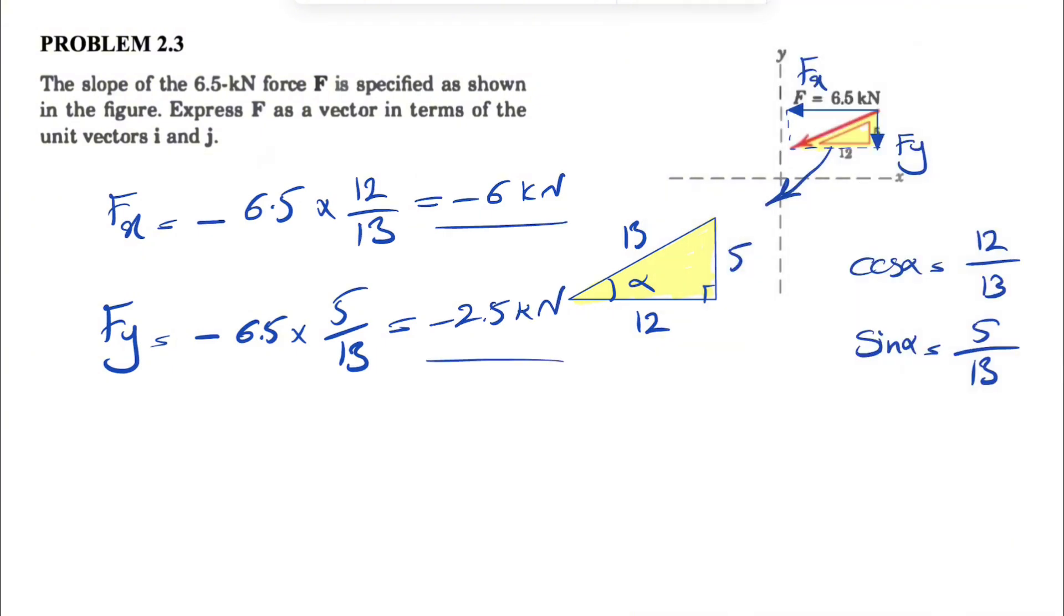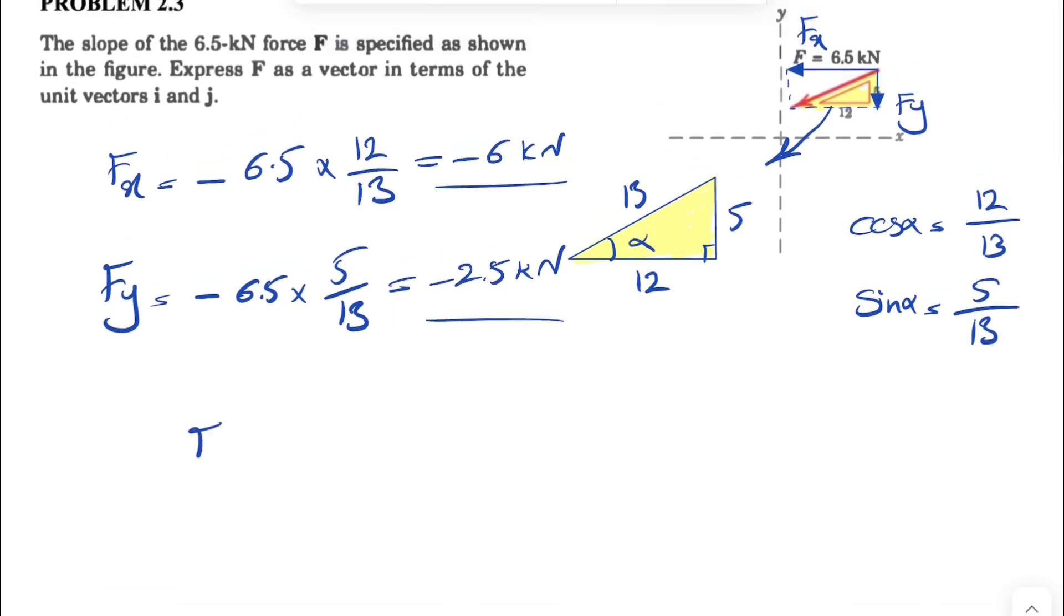So these are the scalar components for x and y. And if you want to show our force and express it as a vector, we're going to have the x component minus 6i minus 2.5j, which is our unit vector for y, and the unit is kilonewtons.